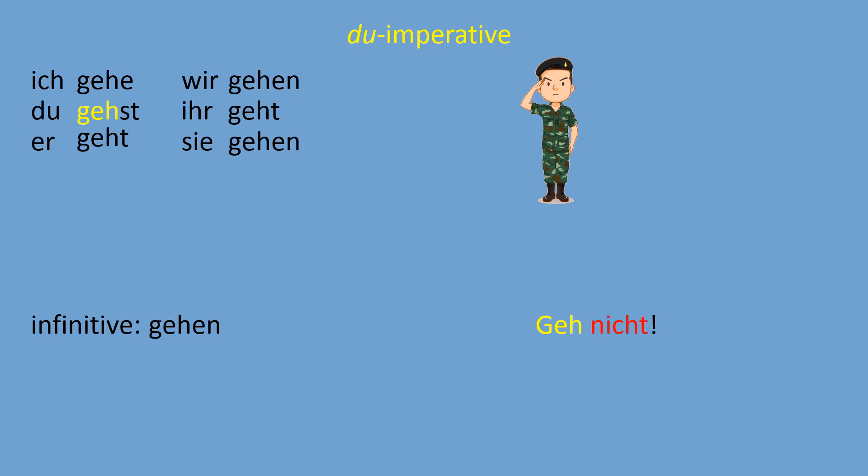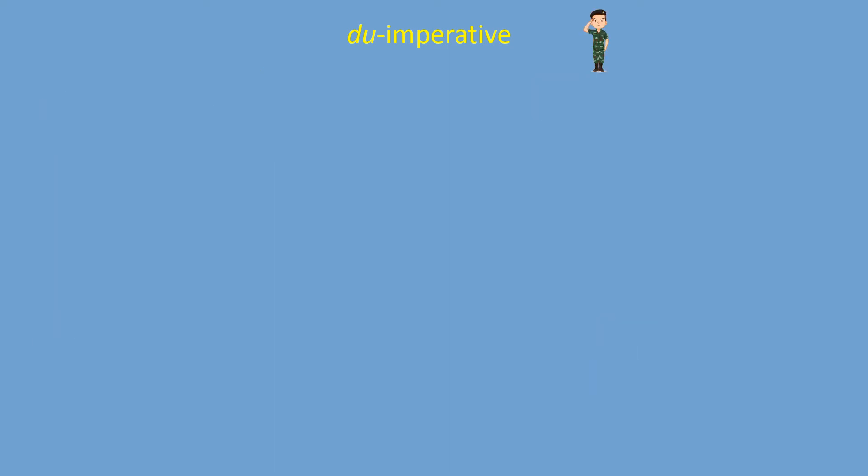If you want to negate your command, you put 'nicht' after your verb — for example, 'Geh nicht!' meaning 'Don't go!' You can also use 'kein' with different endings — for example, 'Mach kein Theater!' meaning 'Don't make a fuss!' — using the negation 'kein' in the command.